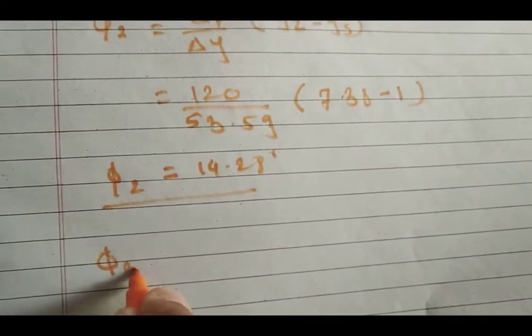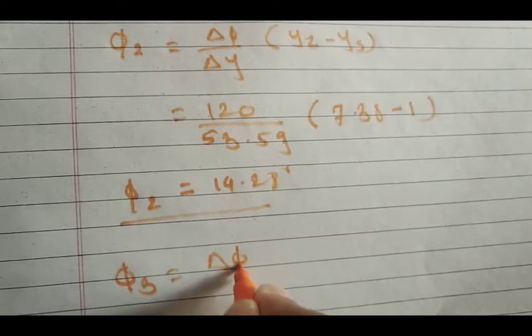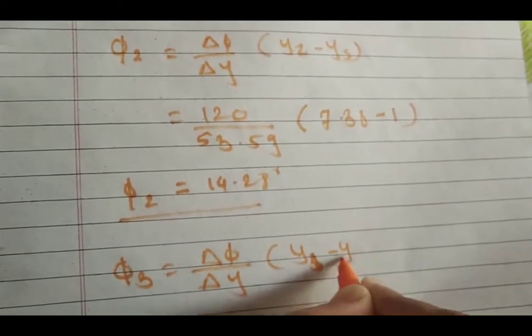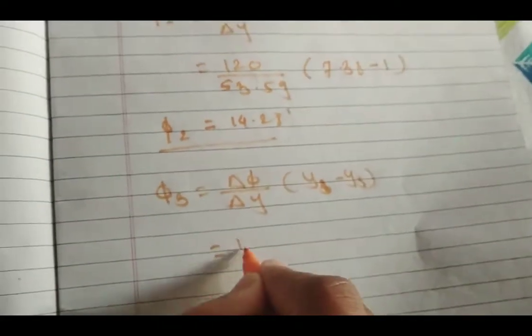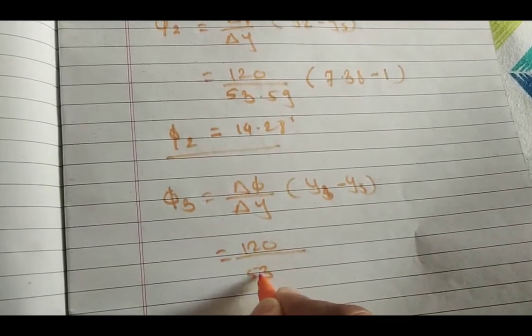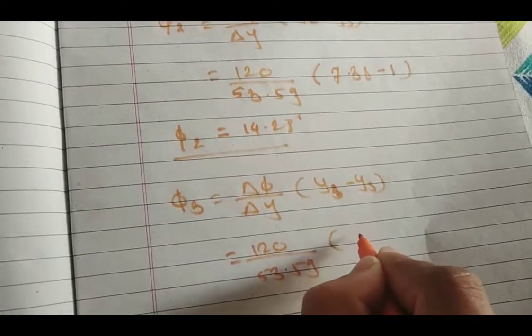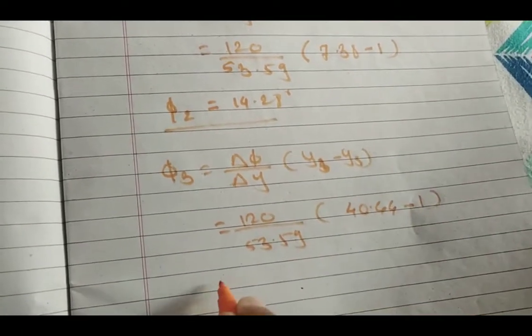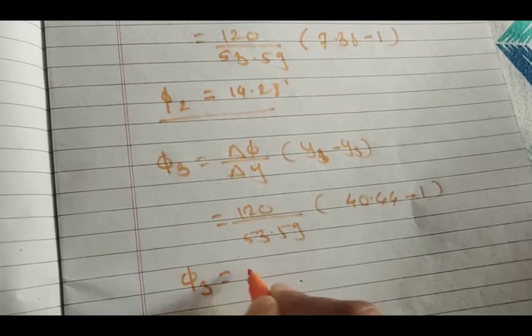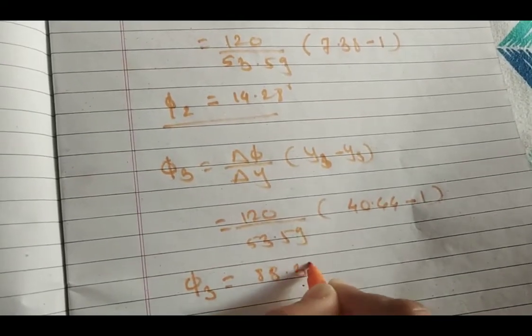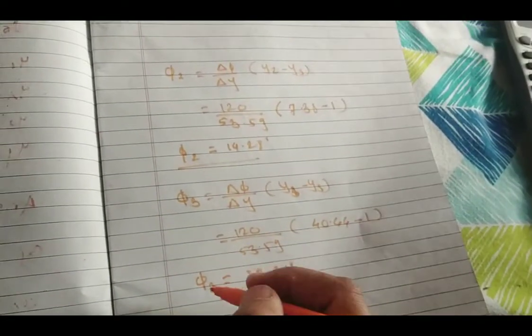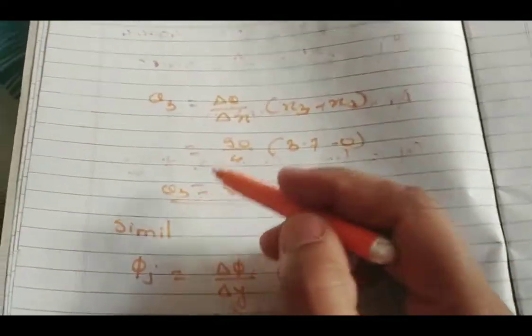Last, phi_3 equals the same formula: (120 / 53.59)(Y3 - Ys). Y3 is 40.45, Ys is 1, and phi_3 = 88.31 degrees. In this way, we have done all calculations of phi_3, phi_2, phi_1, theta_3, theta_2, and theta_1.